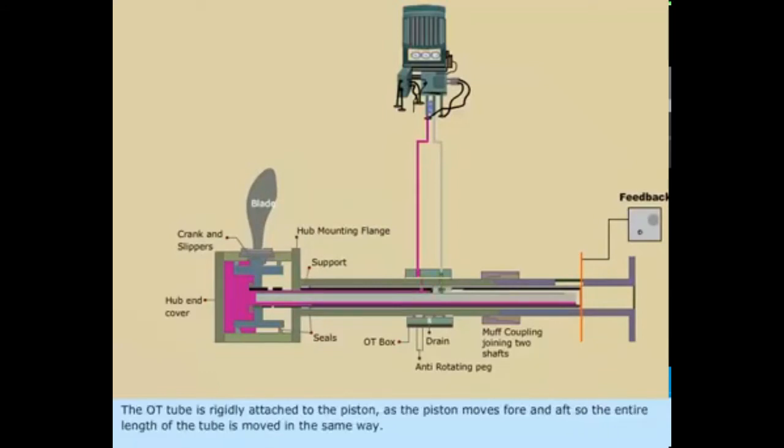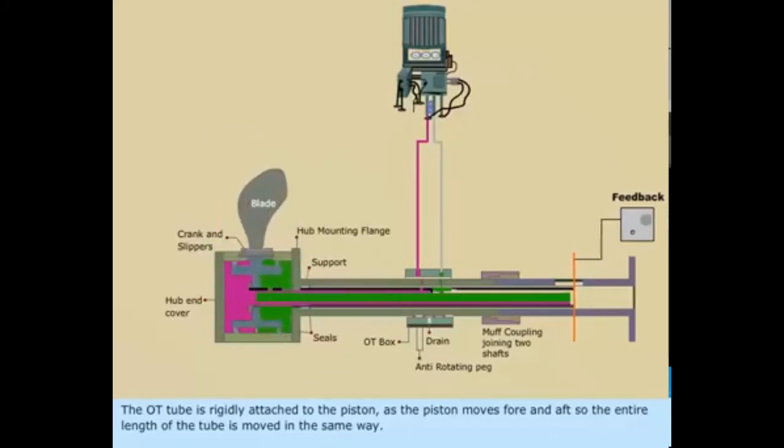The OT tube is rigidly attached to the piston. As the piston moves fore and aft, the entire length of the tube is moved in the same way.